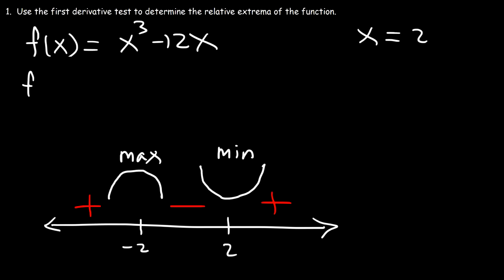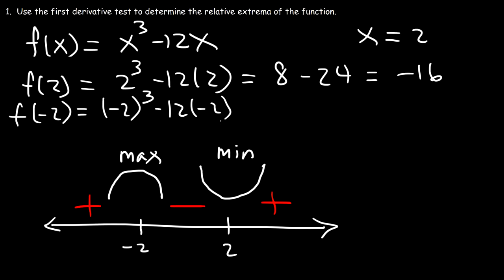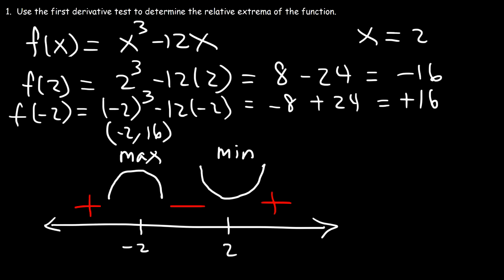Now let's get the y-coordinates. For f(2): 2³ = 8, and 12 × 2 = 24, so 8 - 24 = -16. That's a relatively low number, corresponding to the minimum. For f(-2): (-2)³ = -8, and 12 × (-2) = -24, so -8 - (-24) = -8 + 24 = 16. The maximum is located at x = -2 with a value of 16, and the minimum is at x = 2 with a value of -16.